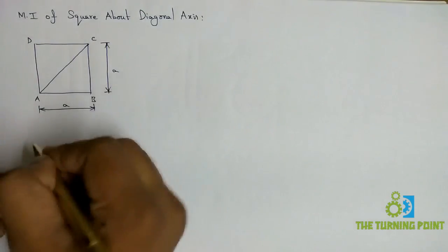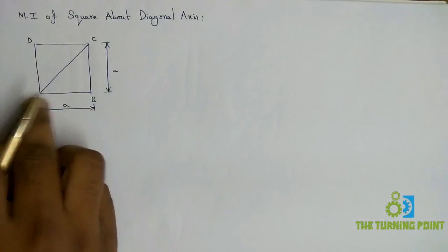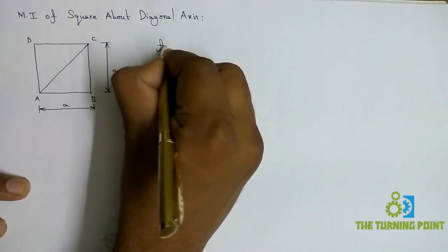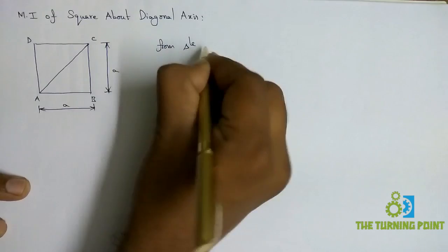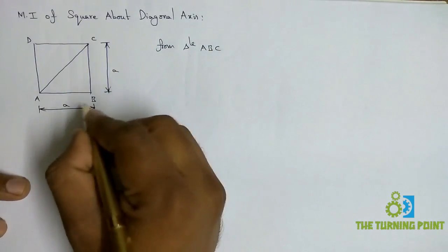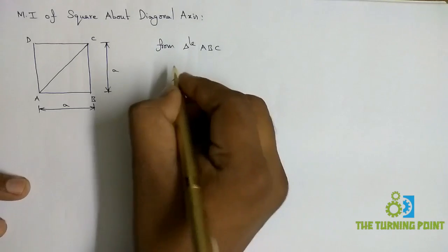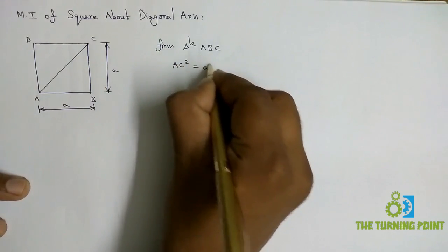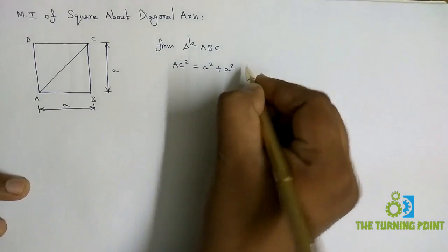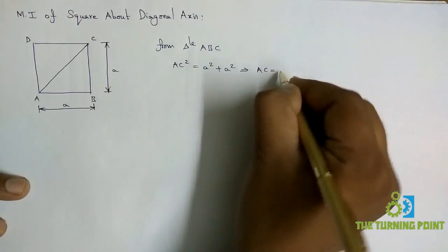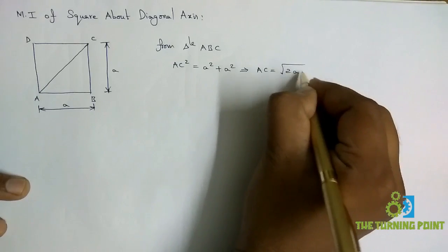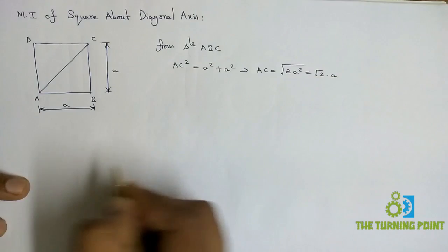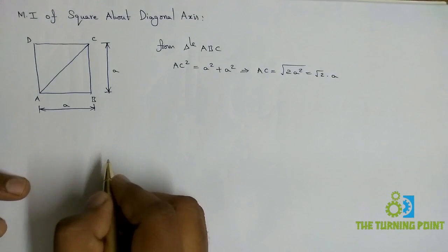So I want to find the length of AC. ABC is in the form of a right-angled triangle. From triangle ABC, side² + side² = hypotenuse², so AC² = A² + A². From that, AC = √(2A²) = √2 · A. That is the value of AC.